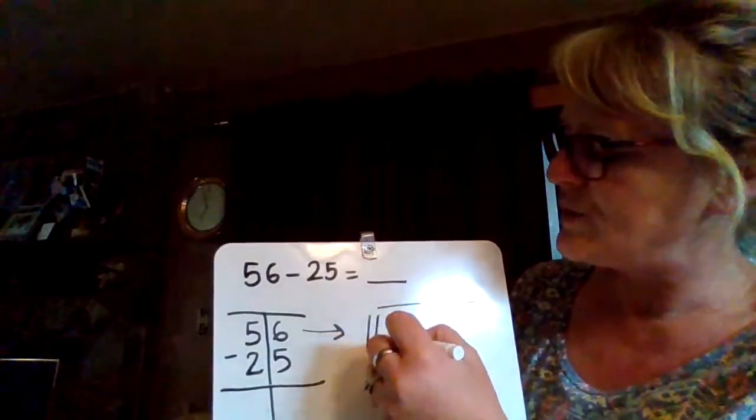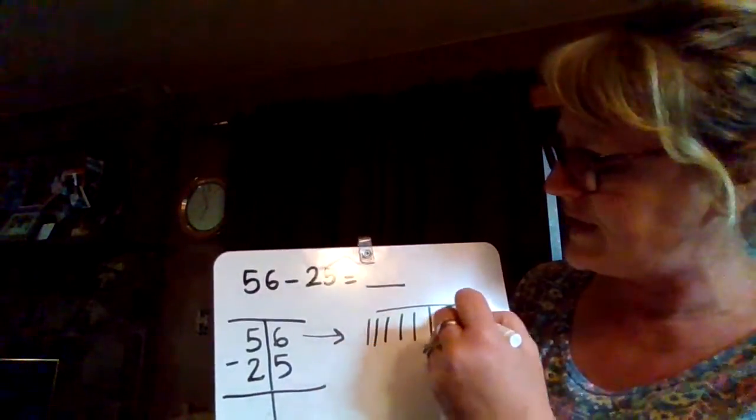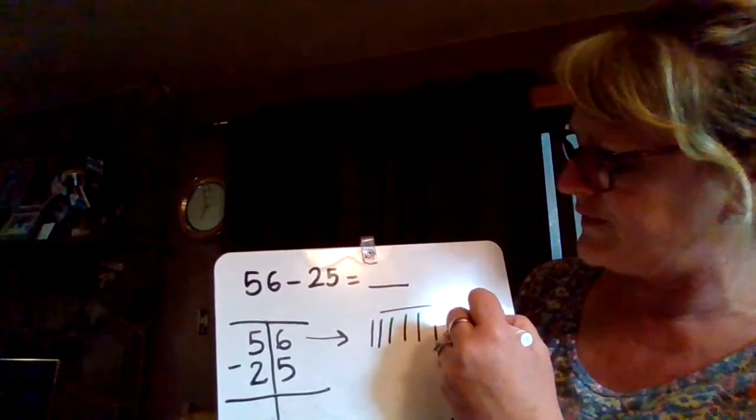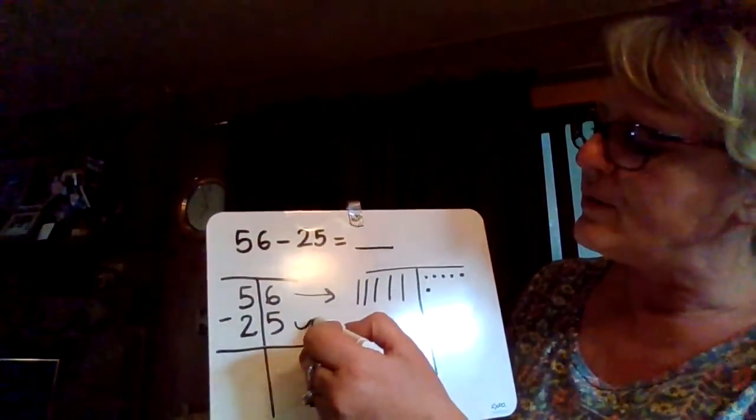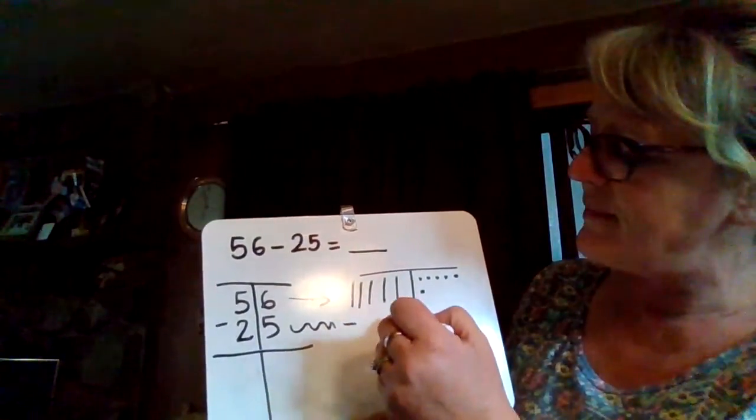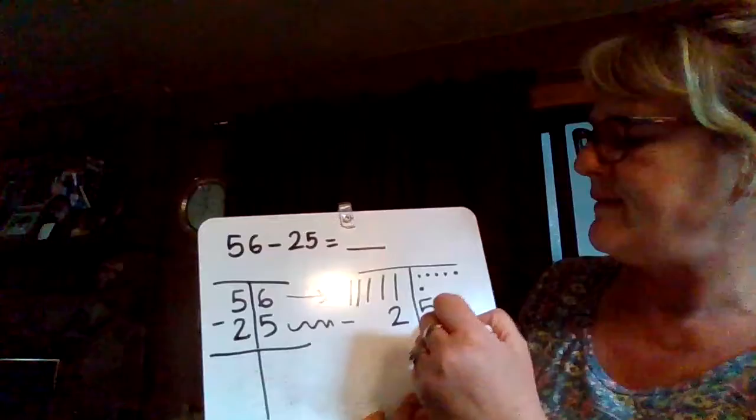[Drawing place value] 10, 20, 30, 40, 50, then 51, 52, 53, 54, 55, 56.